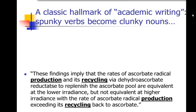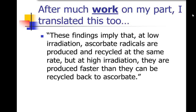That second sentence suffers from the same problem — 'production' and 'recycling' rather than 'produce' and 'recycle.' So I took that second sentence, which I was really trying to understand, and tried to rewrite it into something readable. Here's what I came up with — it's not the most exciting sentence, but at least it's understandable: 'These findings imply that at low irradiation, ascorbate radicals are produced and recycled at the same rate, but at higher radiation, they are produced faster than they can be recycled back to ascorbate.' I stripped a lot of extra words, cut it to about half the size of the original, and turned the nouns 'production' and 'recycling' back into verbs: 'produced' and 'recycled.'